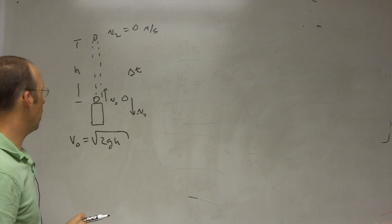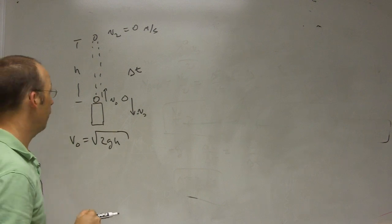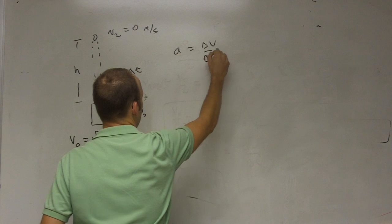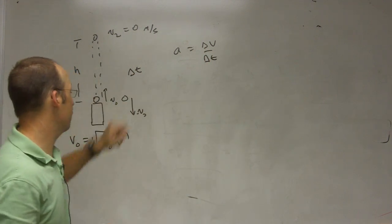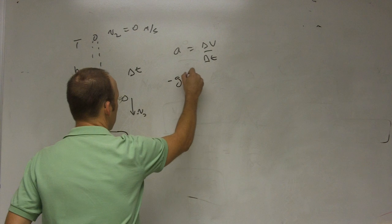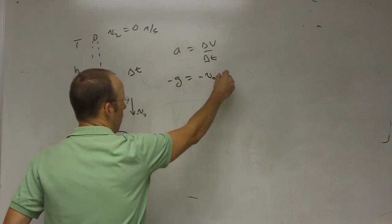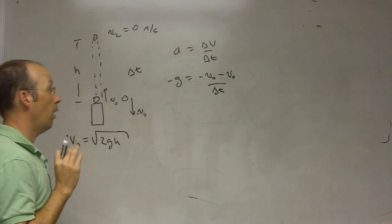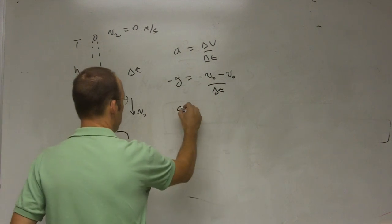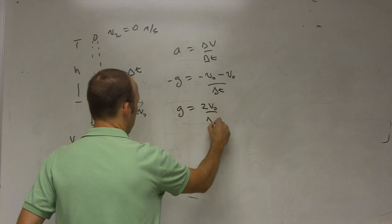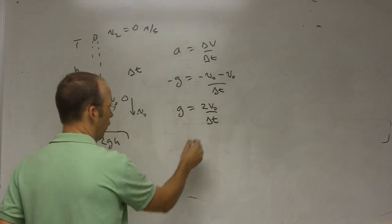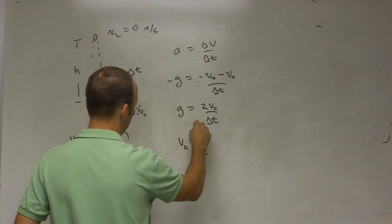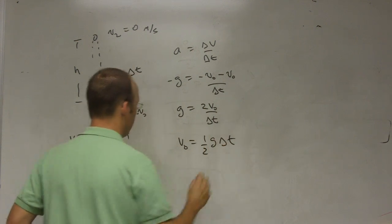Okay, so now let's just use our definition of the acceleration, delta v over delta t. Again, we're just in one dimension here. The acceleration is negative g. The final velocity is negative v0, minus the initial velocity of v0 over delta t. So this is equal to g equals 2 v0 over delta t. So v0 equals 1 half g delta t.